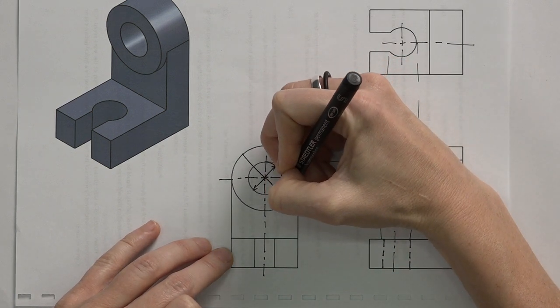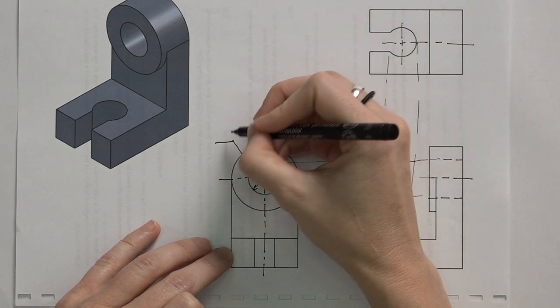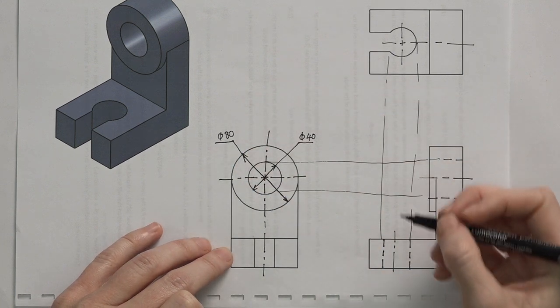Perpendicular to that line, if we have a second circle, we draw it across, we extend the line. And this, for example, is diameter 80.